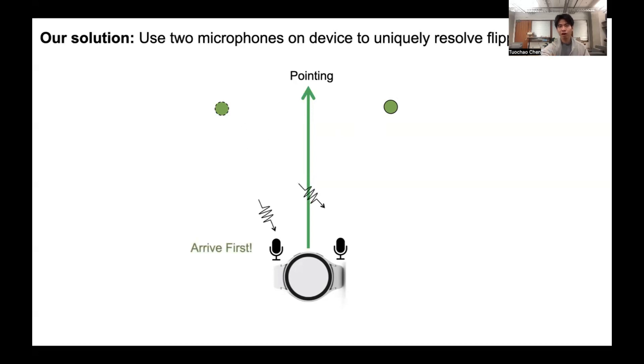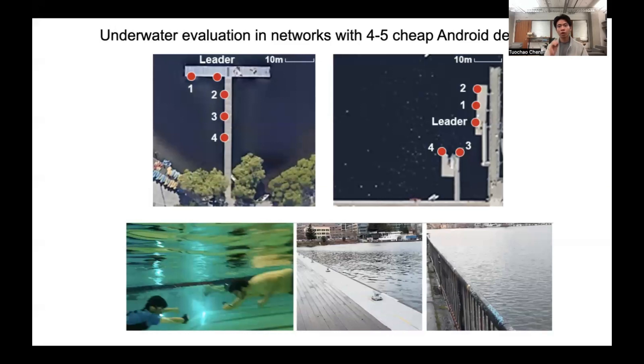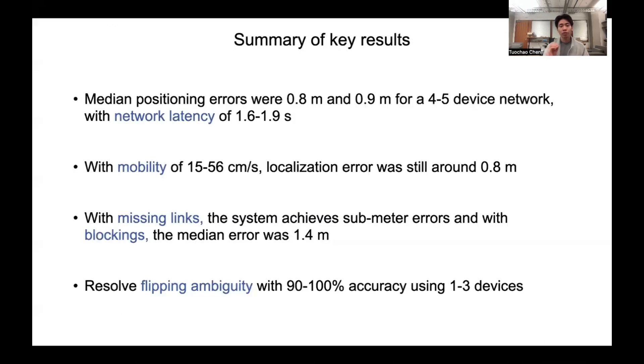Based on these high-level ideas, we designed a joint maximum likelihood estimator to resolve the flipping ambiguity. So we evaluated our positioning system in five different underwater scenarios using cheap Android devices. Our results showed that our median positioning error was 0.8 meters and 0.9 meters for 4 and 5 device networks with network latency of 1.6 to 1.9 seconds.